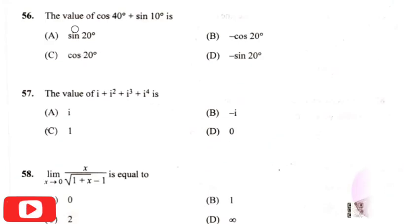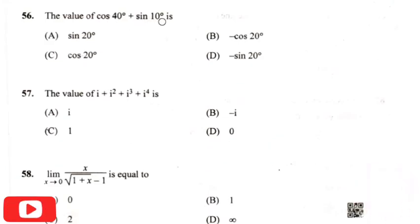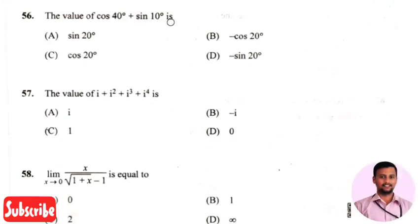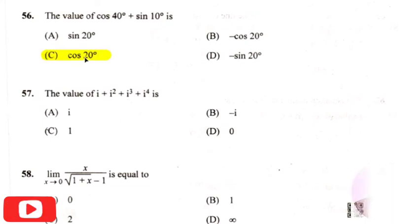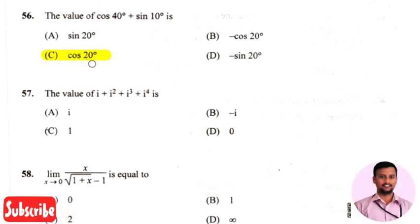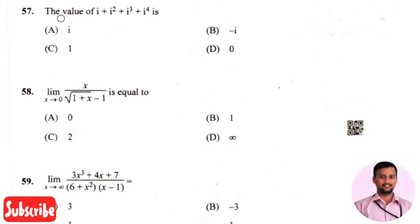The next question is the value of cos 40 plus sine 10 degrees — the right answer is option three, that is cos 20.